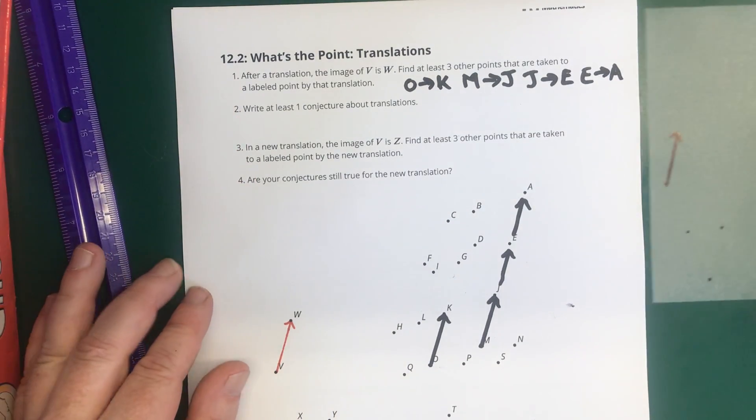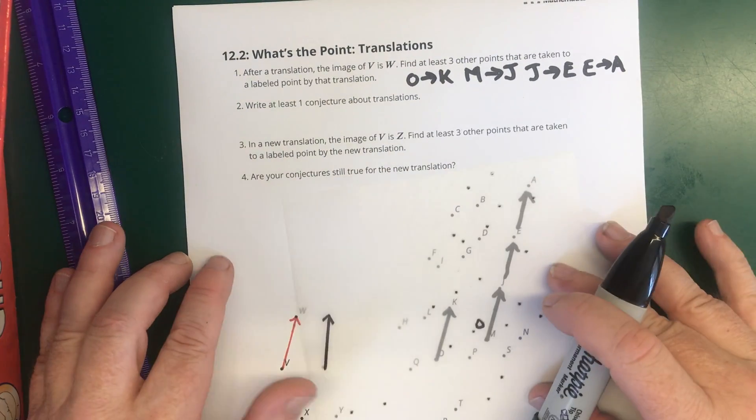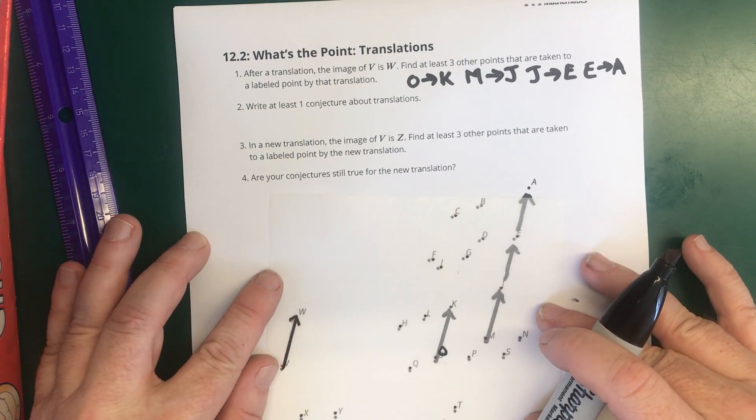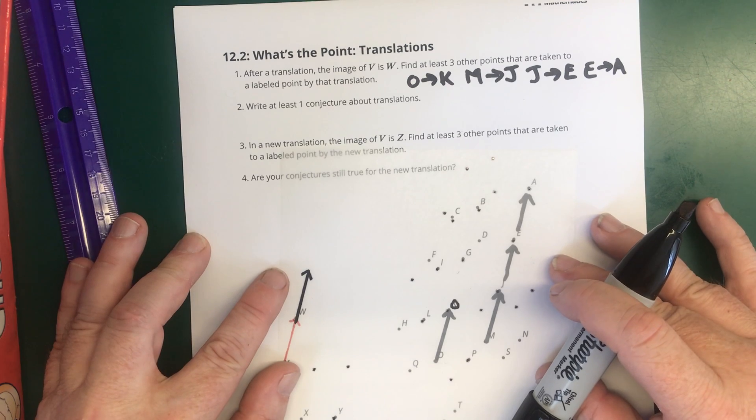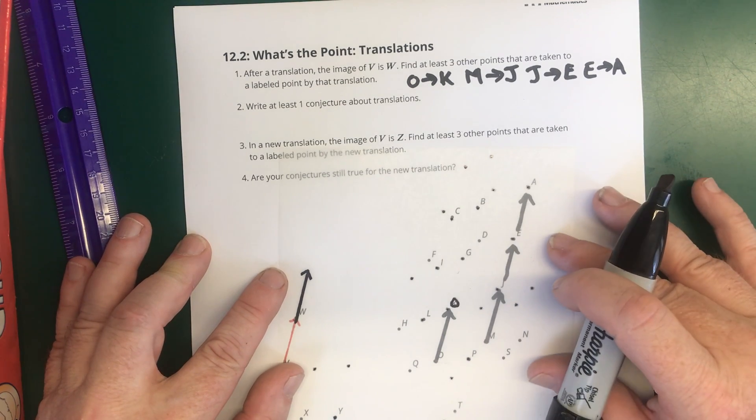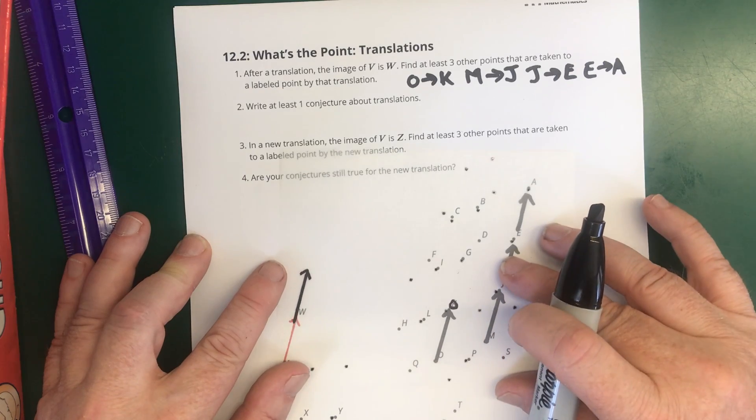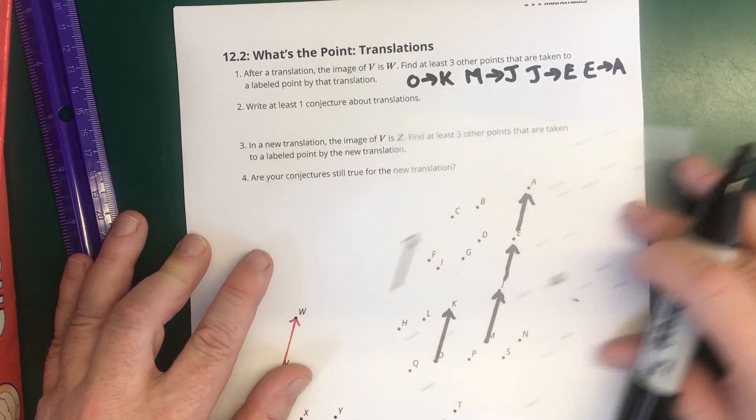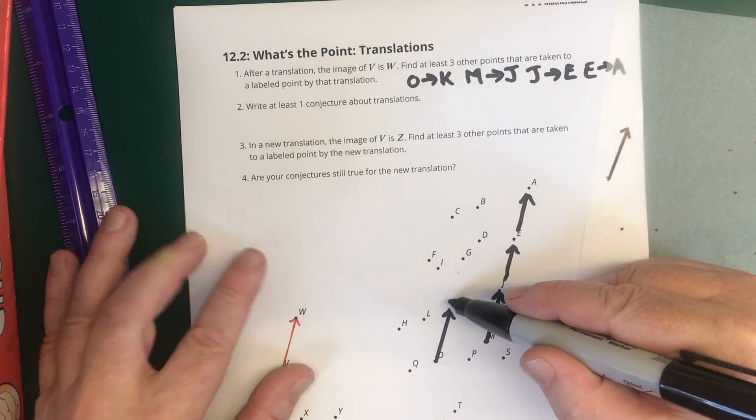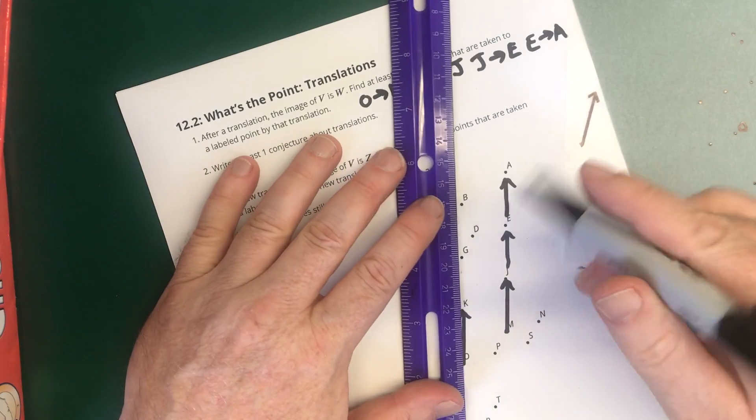Let me see if I can find one more. Let's see. When O went to K, it looks like K went to G and G went to B. So this K dot moves up to G. And the G dot moved up to B. So I'm going to draw those in too. Because I think that will be helpful in our conjectures.